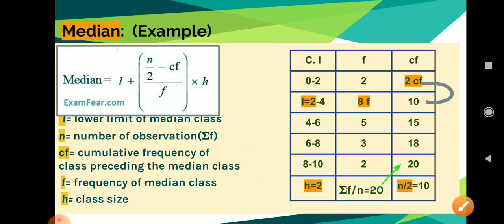Now let me show how to find cf and identify f, lower limit, and h using an example. Observe the table: class intervals are 0–2, 2–4, 4–6, 6–8, 8–10. H is easy to find — the difference between class intervals is 2. The frequencies given are 2, 8, 5, 3, 2. Here, adding all the frequencies gives us n. Note that instead of sigma f we name it n.